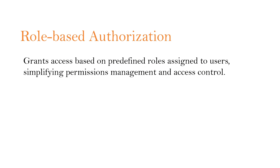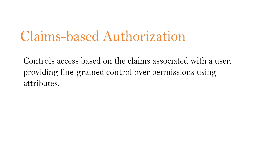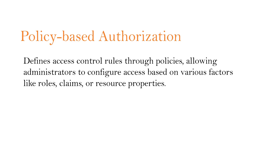ASP.NET Core also supports various authorization techniques. Role-based authorization grants access based on predefined roles assigned to users, simplifying permissions management and access control. Claims-based authorization controls access based on the claims associated with the user, providing fine-grained control over permissions using attributes. Policy-based authorization defines access control rules through policies, allowing administrators to configure access based on various factors like roles, claims, or resource properties.